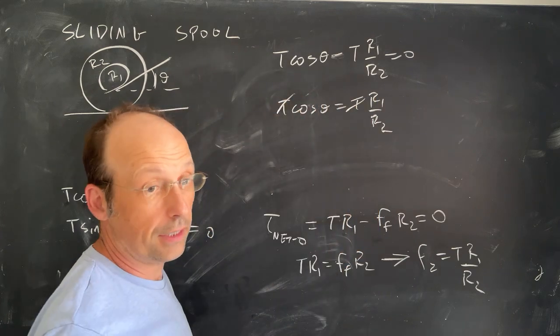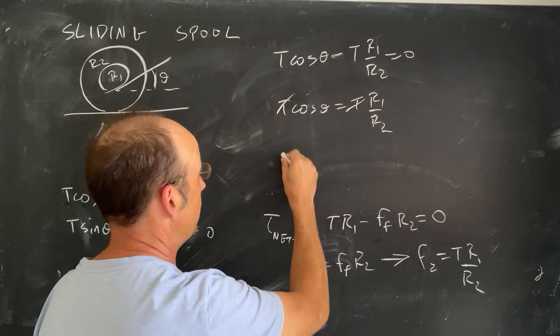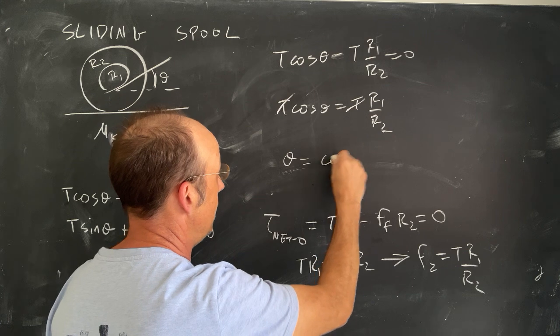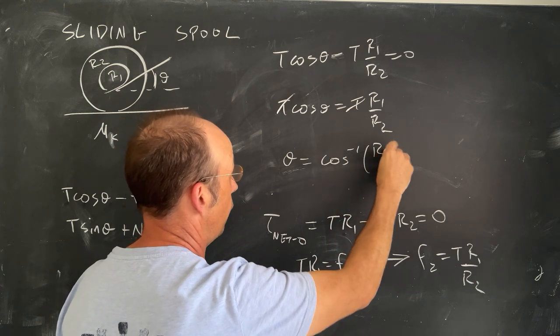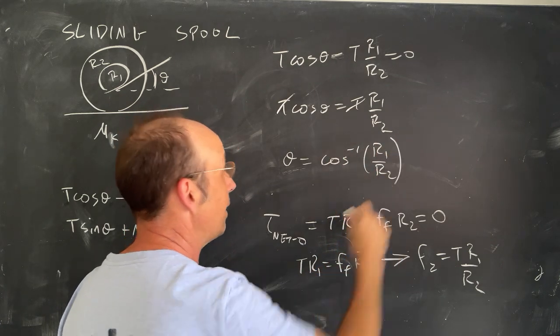So T cosine theta is T R1 over R2. Oh, goodness. Look at there. The T's cancel. And now I can solve for theta. Theta is going to be the inverse cosine of R1 over R2. And let's just check, right?